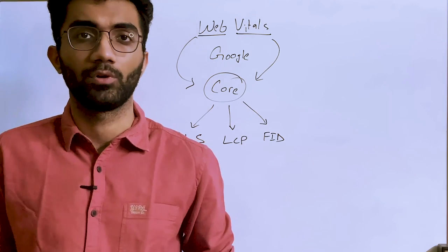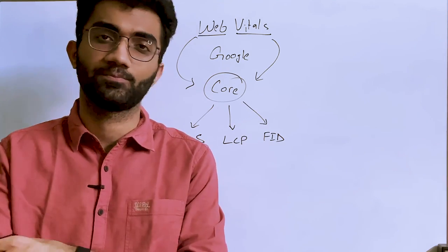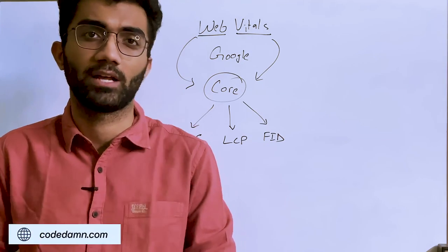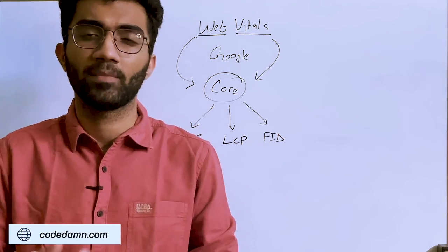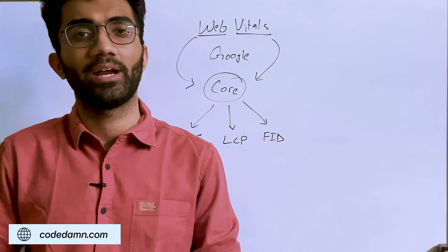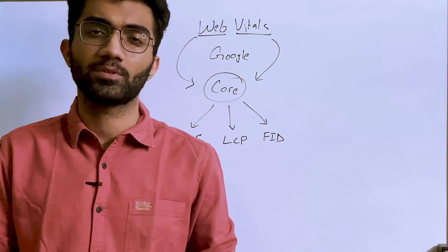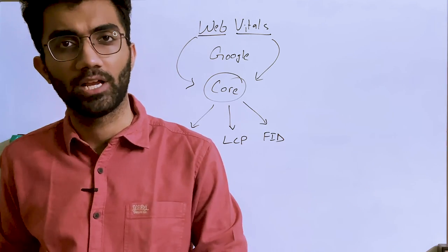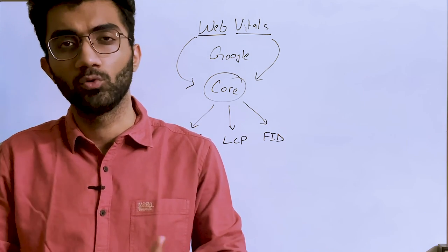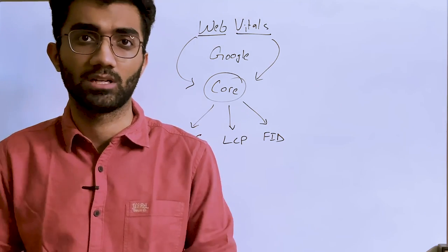Google is software — at the end of the day, it's just a bunch of lines of code. It takes a website, runs it through the Core Web Vitals it has designed, and sees if the website passes that check or not. If it does, that's a thumbs up from Google; if not, that's a thumbs down.